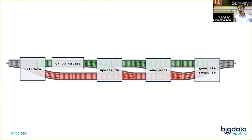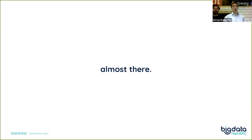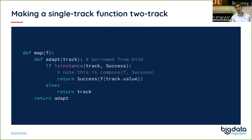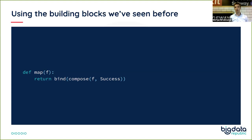A nice example is when we implemented map and realized it looked very familiar — we already had the adapt function, and success of f is basically a function composition. When you realize your program is not more than a composition of functions, you end up with one-liners where you can abstract away a lot of implementation details just by composing functions. This greatly reduces the number of lines needed to achieve what would normally require much more code.